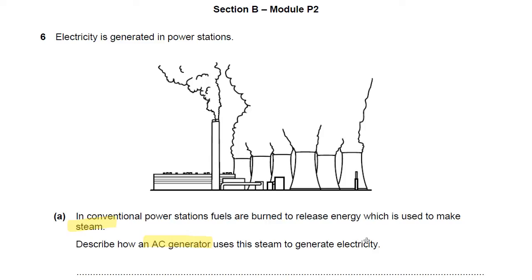I think this is another case where you're just going to need to learn a kind of description of how an AC generator works. Unless you do the triple science physics, the separate physics, then you're never going to need to know more than just a kind of definition of how it works. So have a little look back in a textbook or at your revision guide, have a little go at this question and then come back and we'll see how well you did.